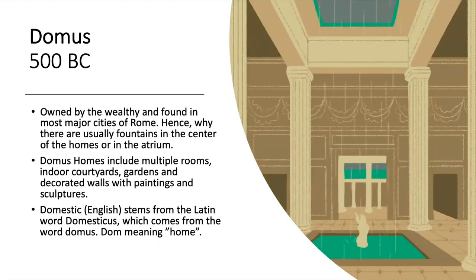Domus, 500 BC. Often owned by the wealthy and found in most major cities of Rome, which is why they usually feature fountains in the center of the home or in the atrium. Domus homes include multiple rooms, indoor courtyards, gardens, and decorated walls with paintings and sculptures. When building these homes, they are typically sectioned into 16 areas with two focal points: an atrium and an open roof concept, where two diagonal roofs flow into the area and land into the atrium. The word domestic in English stems from the Latin word domesticus, which comes from the word domus, meaning home.